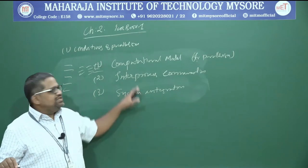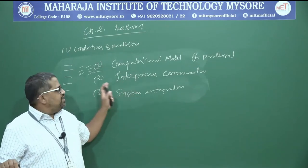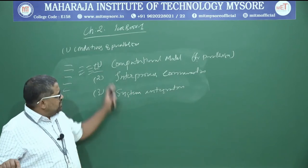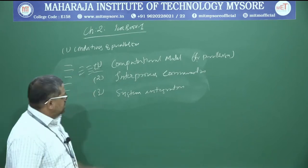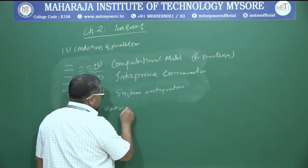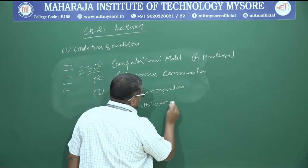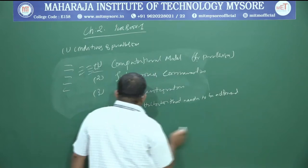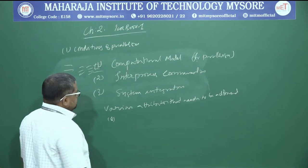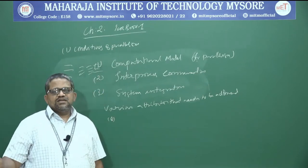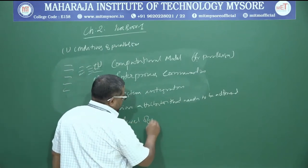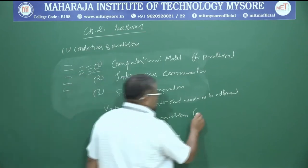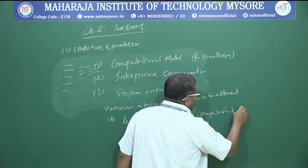If you are able to address these three key aspects, you can move from sequential execution to a parallel execution approach. Now depending upon this, there are various attributes that need to be addressed. The first attribute is the level of parallelism, which I'm going to call computational granularity.